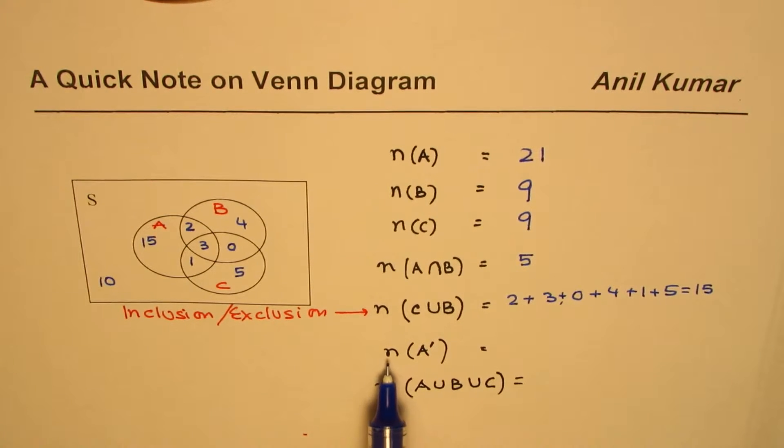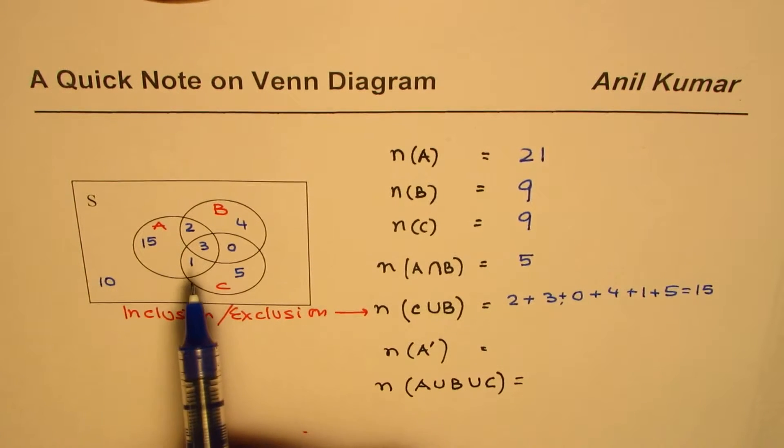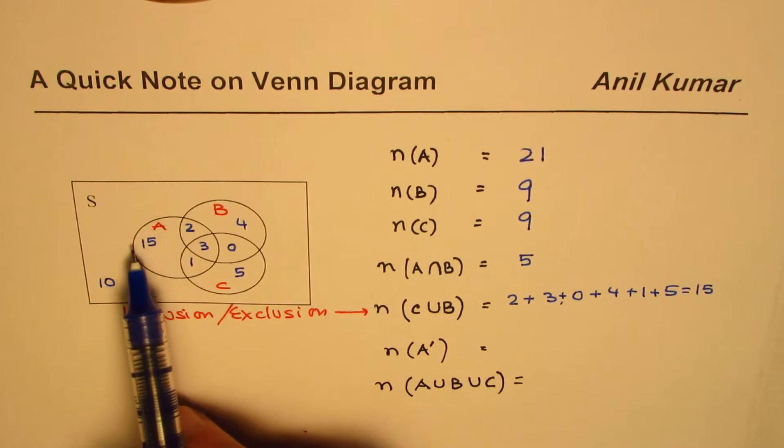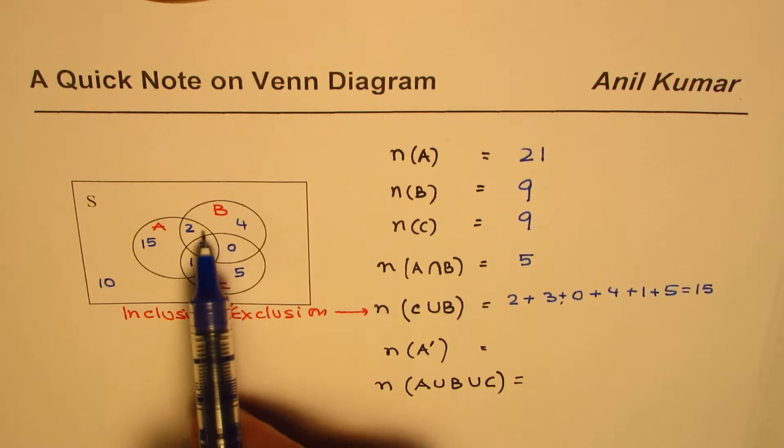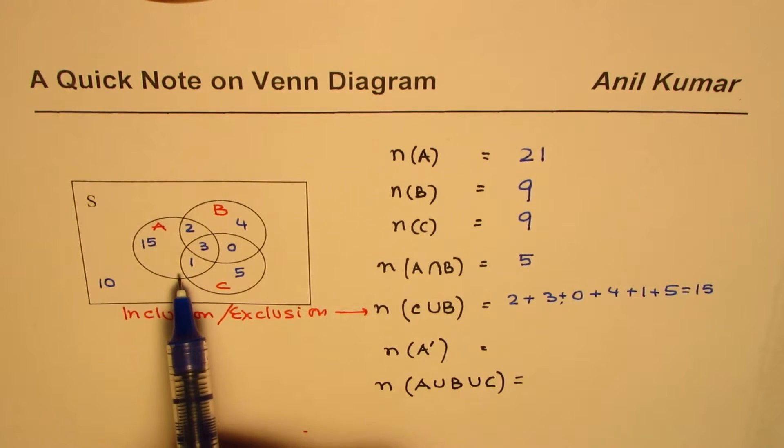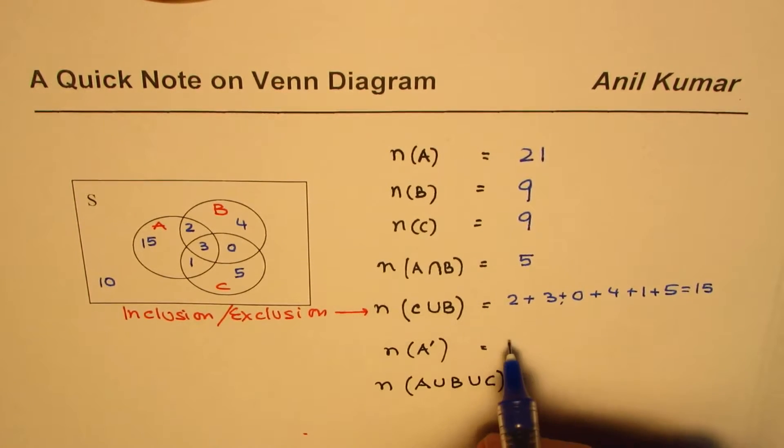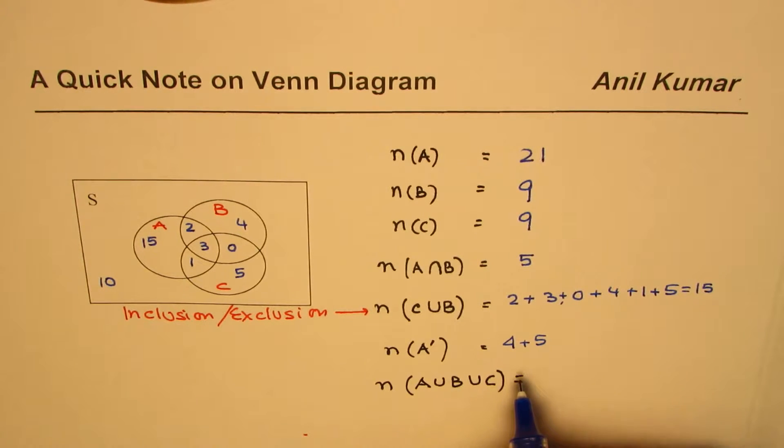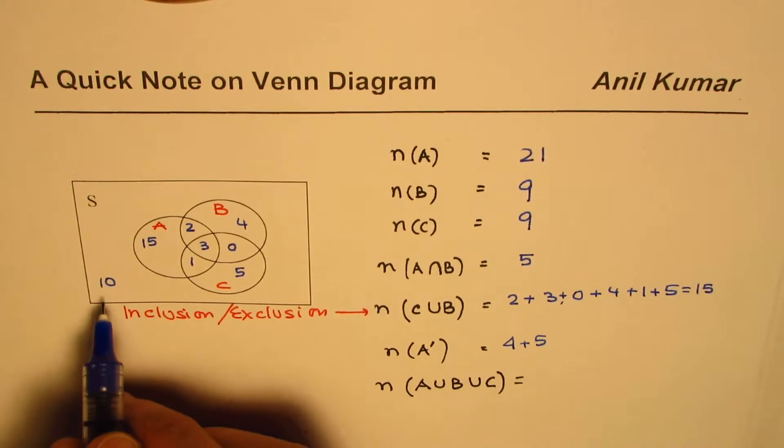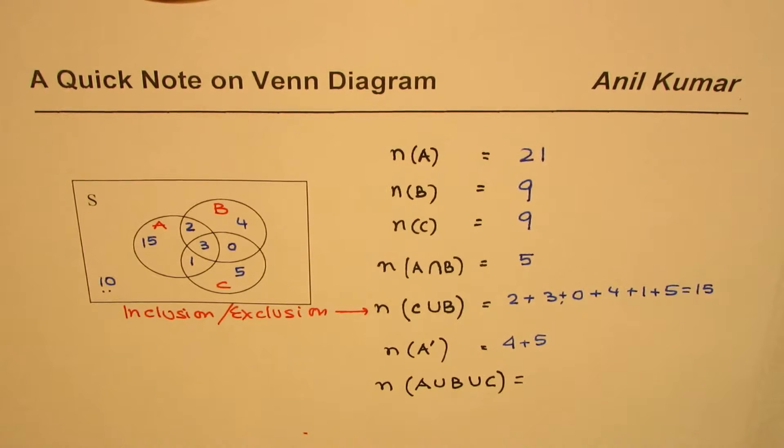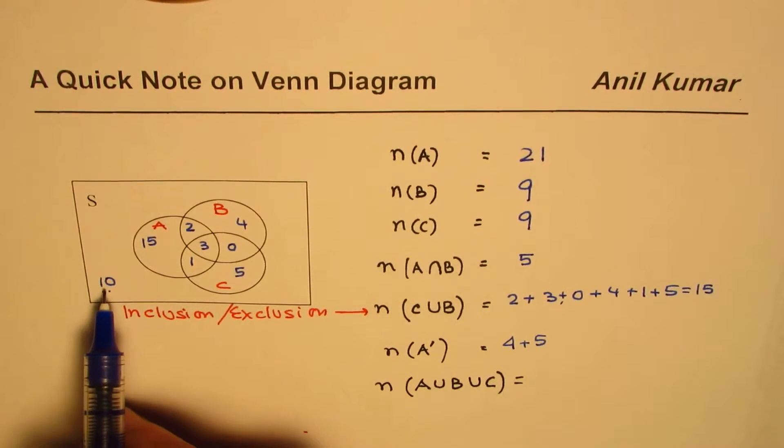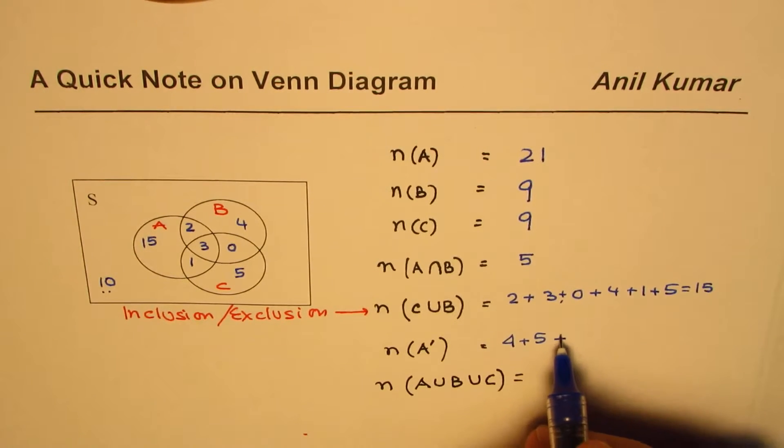Now here's another important one: number of elements not in A. So one thing you could do is, this is all A, so the number of elements which are not in A is outside A. So you could see 4 plus 5. Am I forgetting something? How about 10?